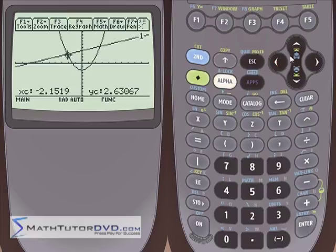You see, it's going to kind of just hop around because of the way the pixels are lined up on the screen. It's not going to give you an exact solution. In order to find an exact solution, you need to go back to the math menu.